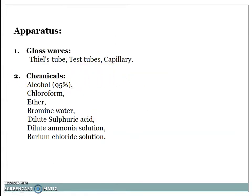Apparatus and glassware required are test tubes, capillaries. The chemicals are alcohol, chloroform, ether, bromine water, dilute sulfuric acid, dilute ammonia solution and barium chloride solution. For actual step-wise procedure, we move towards laboratory.